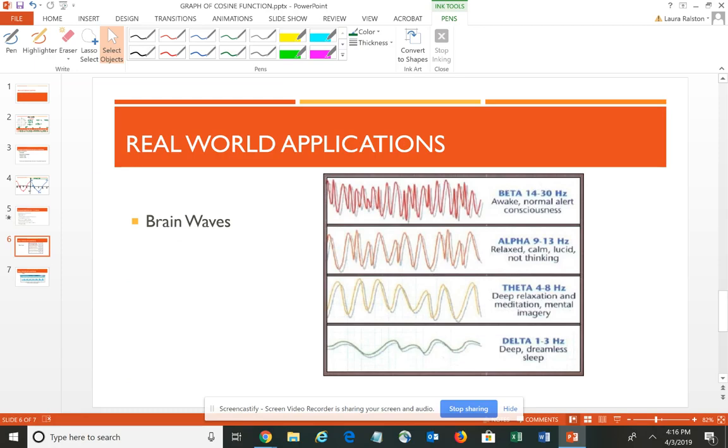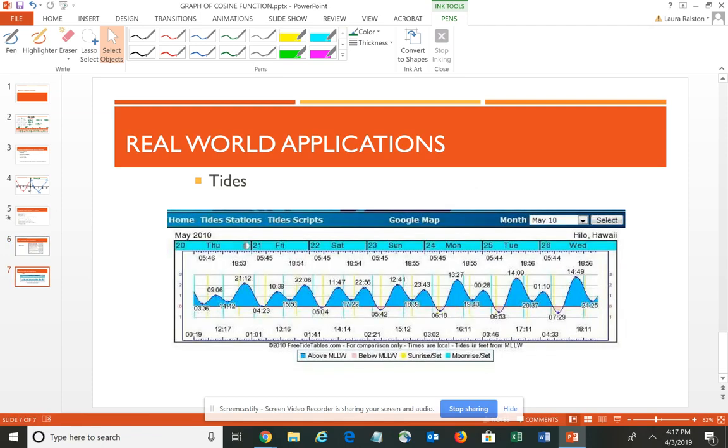Just to kind of help you see, there are real-world applications of the cosine function as well. One of those is brain waves. You can see, if you're in a deep, dreamless sleep and your brain's not really working, you can see how the curve is stretched out. But if you're awake, normal, and alert, and thinking, it's all kind of closer together. So we have to think about how can we transform that basic cosine curve to kind of fit or model the brain waves, and we're going to be talking about that a little bit later. Another application of cosine curves is the idea of the tides – the high tide and low tides. And also think about how high or how low those particular tides might be.